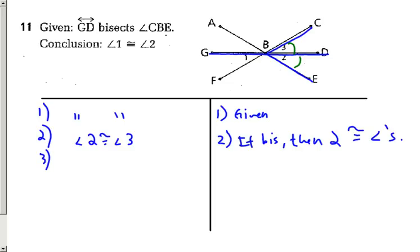Now I've got to look at the picture and see if there's any other information I can use to finally prove what I'm trying to prove, that is angle 1 and angle 2 are congruent. I can't say that straight off, but I do see a pair of vertical angles with 1 and 3.